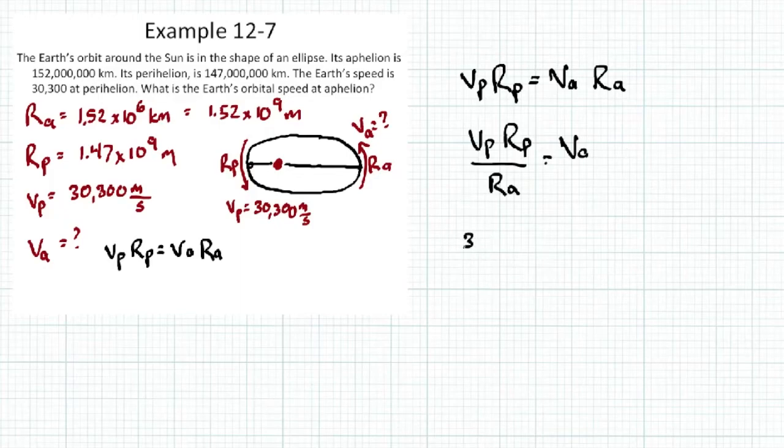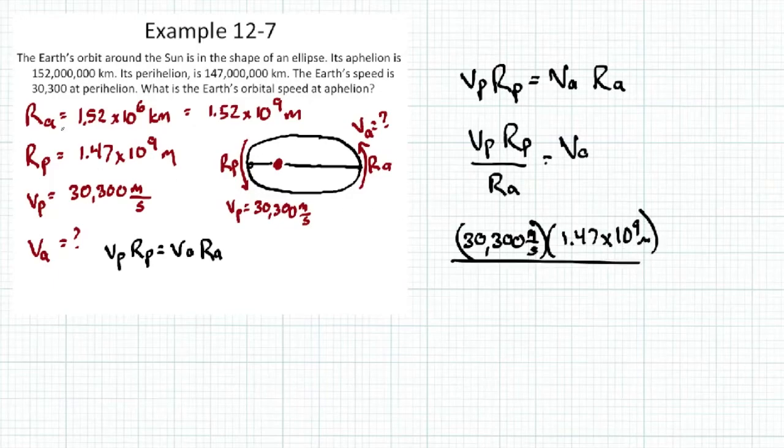Let's plug and chug. Velocity at perihelion is 30,300 meters per second times our radius at perihelion, 1.47 times 10^9 meters, divided by radius at aphelion, 1.52 times 10^9 meters. That gives us velocity at aphelion equals 29,303 meters per second.